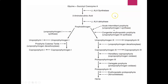This graph shows the heme production pathway, starting with delta-ALA synthetase and delta-aminolevulinic acid, progressing to PBG and on to heme. The different enzyme deficiencies associated with each porphyria are indicated in parentheses, giving a clear picture of where in the heme pathway each disorder originates.